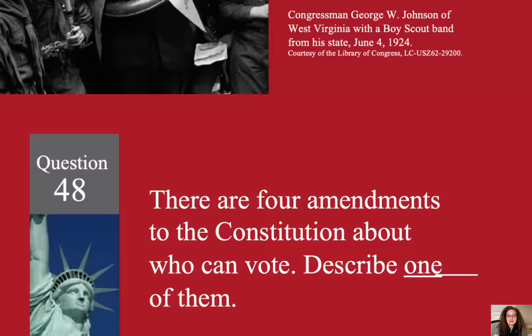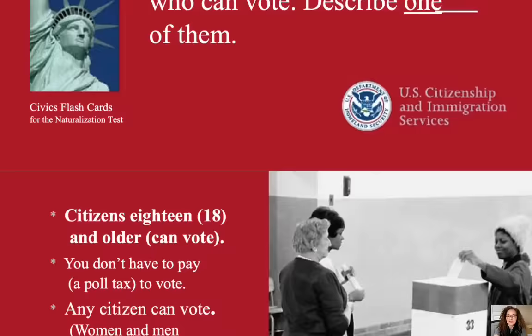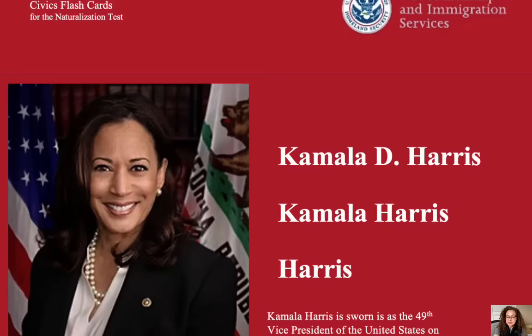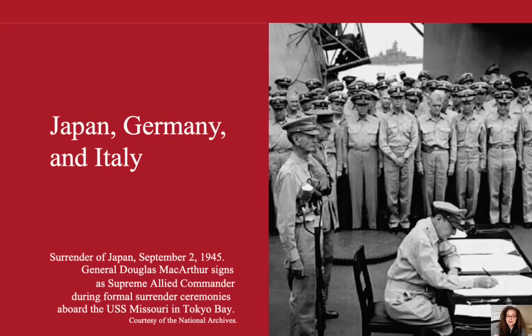There are four amendments to the Constitution about who can vote. Describe one of them. Citizens 18 and older can vote. What is the name of the vice president of the United States now? Harris. Who did the United States fight in World War II? Japan, Germany, and Italy.